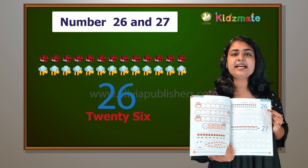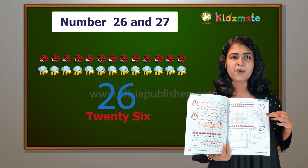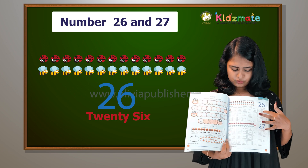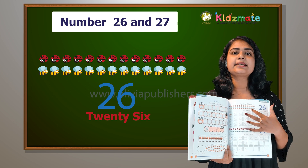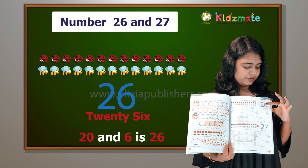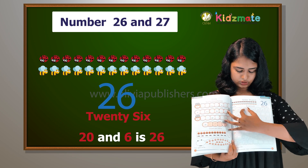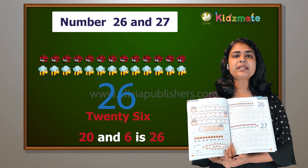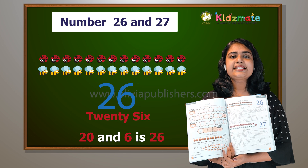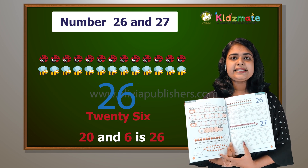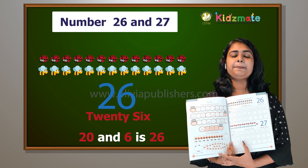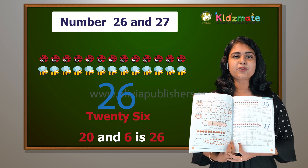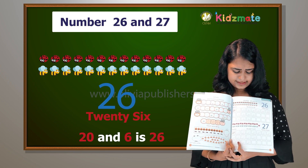Do you see twenty-six written here? We have two and six. We have two, and we added 6 too, okay? What do you get? 26, alright?